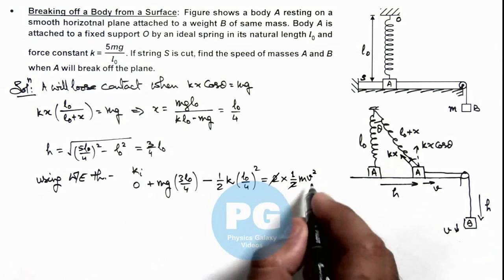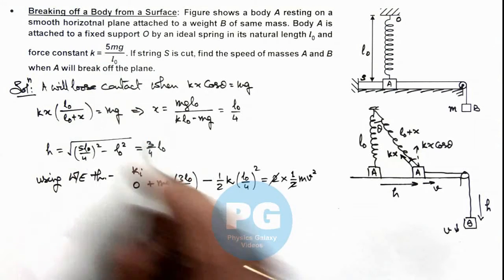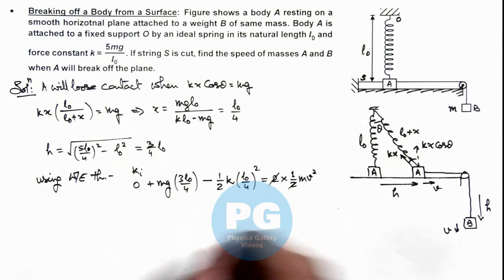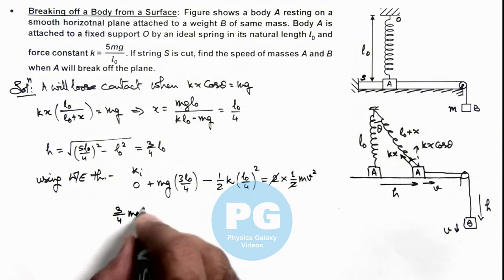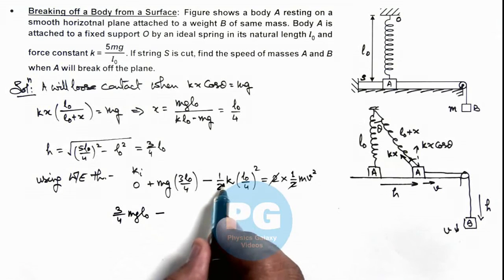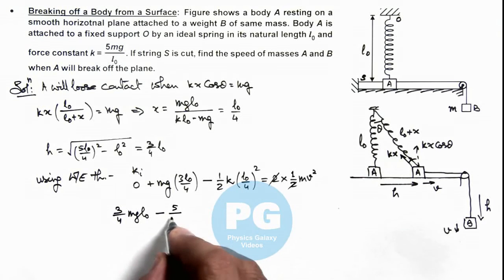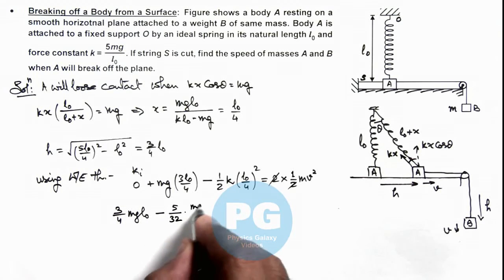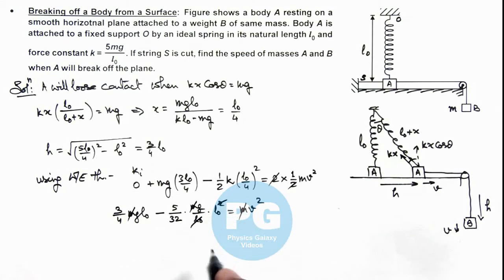Simplifying with k = 5mg/l₀: mg(3l₀/4) - ½(5mg/l₀)(l₀/4)² = mv². This gives 3mgl₀/4 - 5mgl₀/32 = mv². The mass m and one l₀ cancel out on both sides.